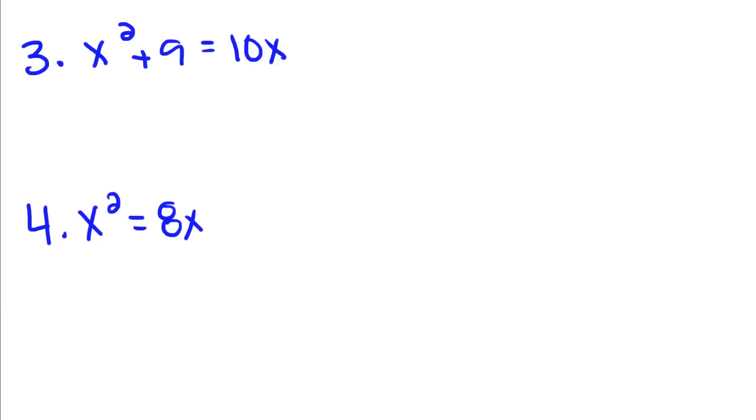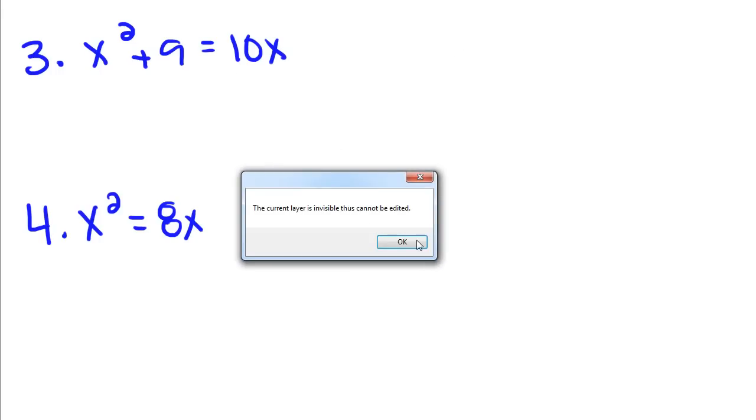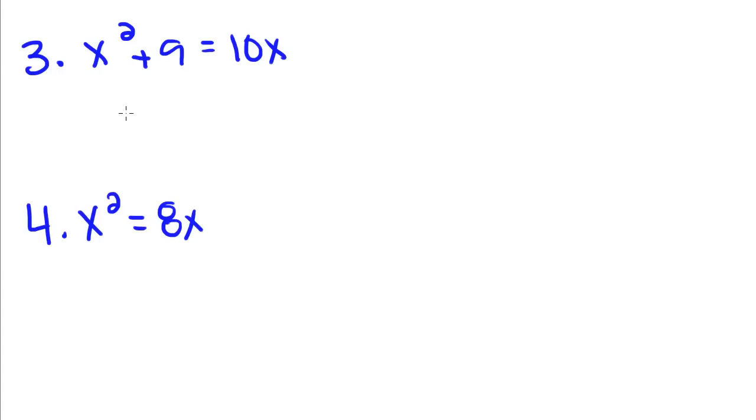Now, we're going to do two more examples. Remember the first thing I said is you have to have an expression that equals zero. So in order to set this equal to zero, we have to subtract this 10 over. So this becomes x squared minus 10x plus 9 equals zero. Now, if you think about it, the only thing that's going to multiply to get 9 and add to get negative 10 is going to be 9 and 1.